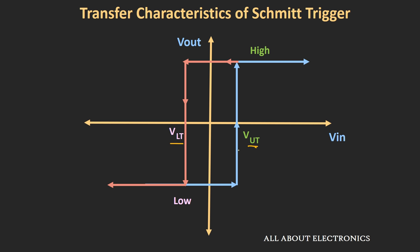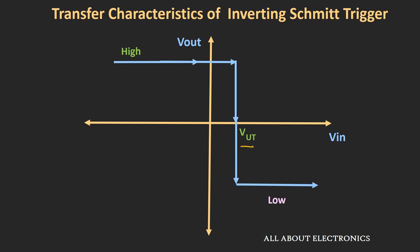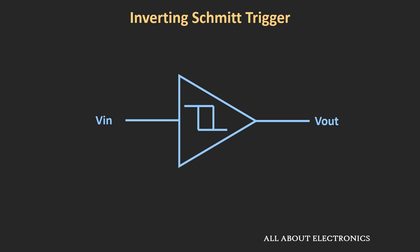Similarly, we can have a hysteresis curve for the inverting Schmitt trigger. In this case, whenever the input signal is less than the upper threshold voltage, the output will be high; once it crosses the upper threshold, the output becomes low and remains low. When the input starts reducing and crosses the lower threshold voltage, the output becomes high again. This is the transfer characteristic curve of the inverting Schmitt trigger. This curve can be shifted right or left by providing an external reference voltage. The symbol of the inverting Schmitt trigger shows the hysteresis curve inside the triangle, or it can be represented by adding a bubble at the output of the non-inverting Schmitt trigger symbol.